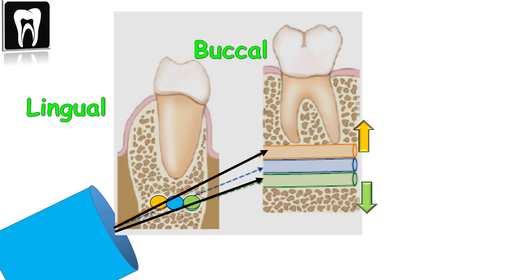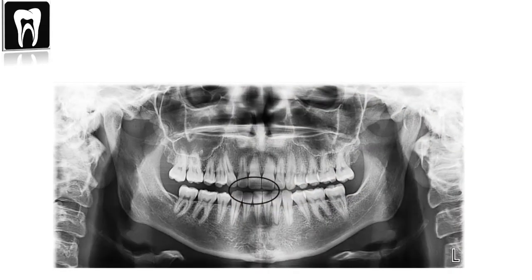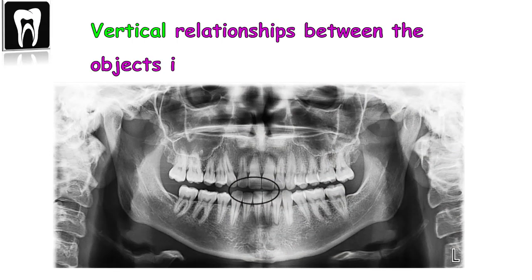Thus the distance between the root apex and the mandibular canal can be misrepresented on a panoramic radiograph. The relationships between objects in the vertical dimension may not accurately represent true anatomic relationships, so the assessment of vertical relationships in a panoramic radiograph is unreliable. This is especially important when assessing the relation between the mandibular canal and an impacted third molar.